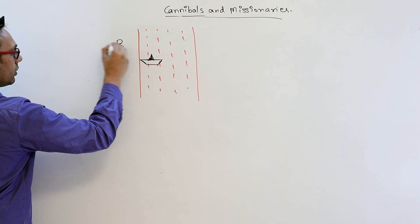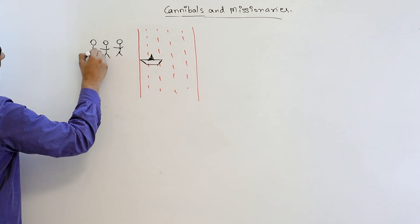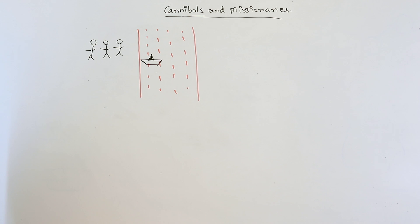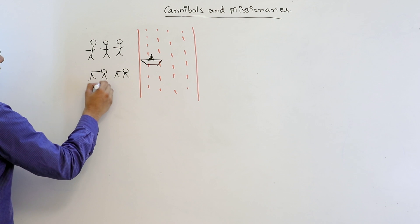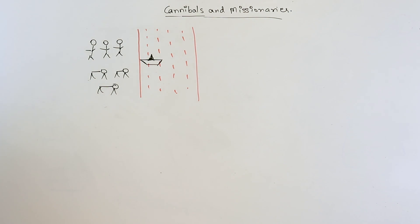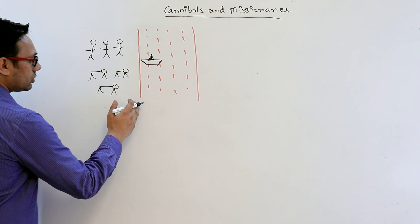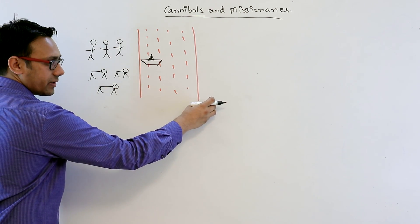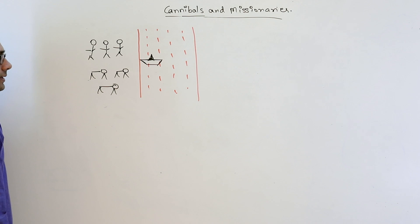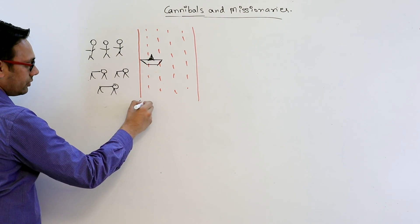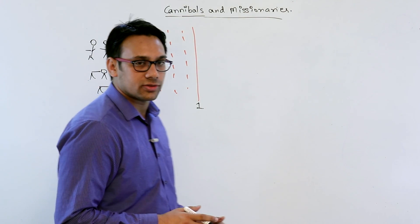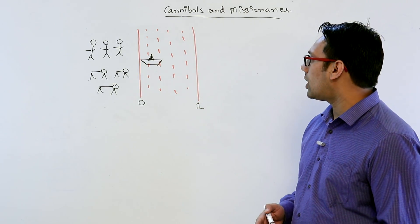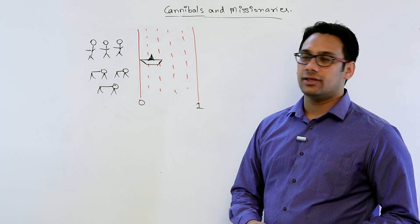In this Cannibals and Missionaries problem, there are three missionaries and three cannibals. They want to cross from this bank to the next bank — from location 0 to location 1. The problem is: at any time during the process, if the cannibals outnumber the missionaries, the cannibals are going to eat them.